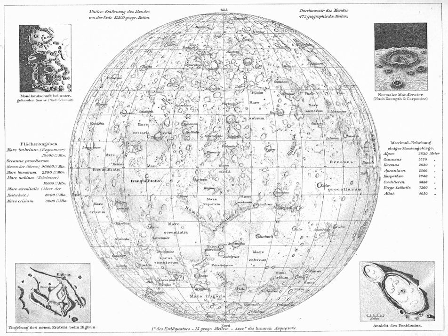Planetary nomenclature, like terrestrial nomenclature, is a system of uniquely identifying features on the surface of a planet or natural satellite so that the features can be easily located, described, and discussed.